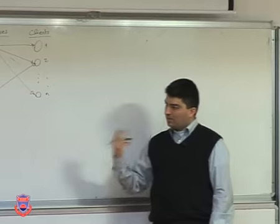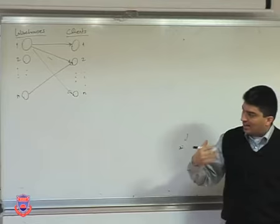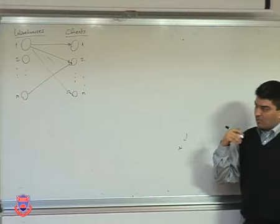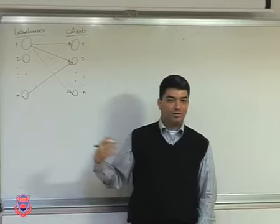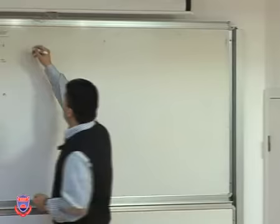So there are two decisions: first, for each warehouse, whether or not I'm going to use it; and second, if I use a warehouse, how much I'm going to send from that warehouse to each of the clients. If you compare this with the transportation problem, in the transportation problem we didn't need to worry about whether we'd use a warehouse because there was no fixed cost. However, now we also have to decide whether a particular warehouse will be used.